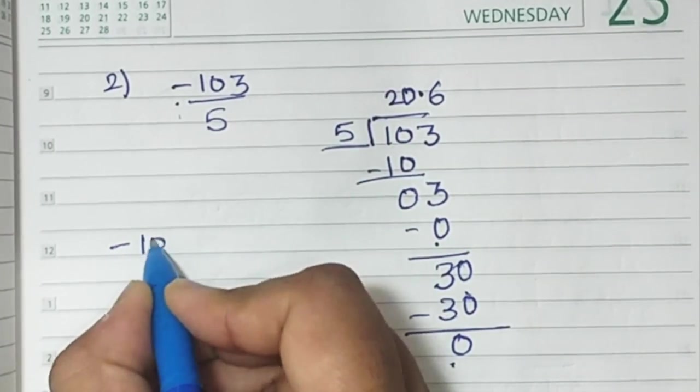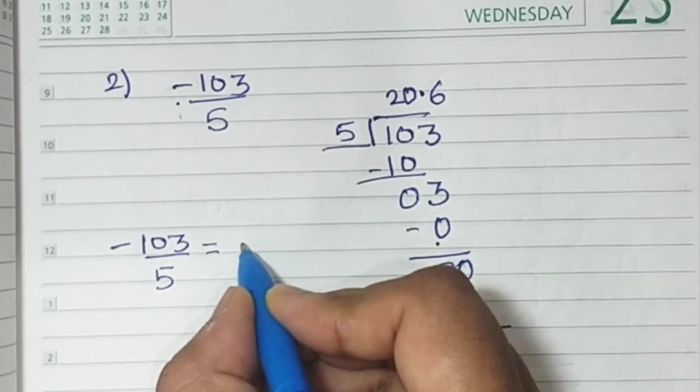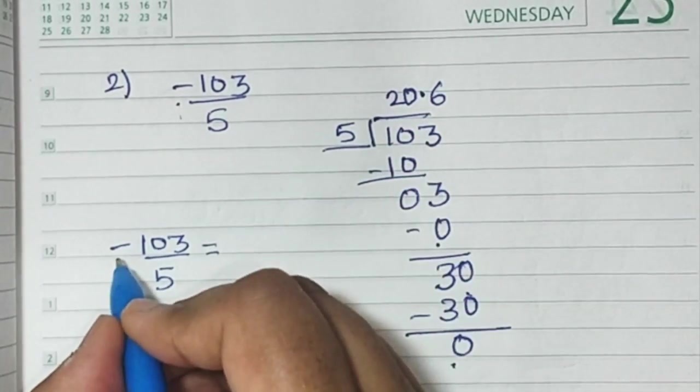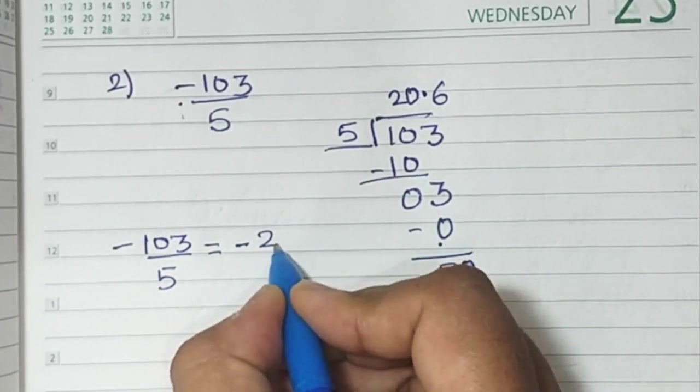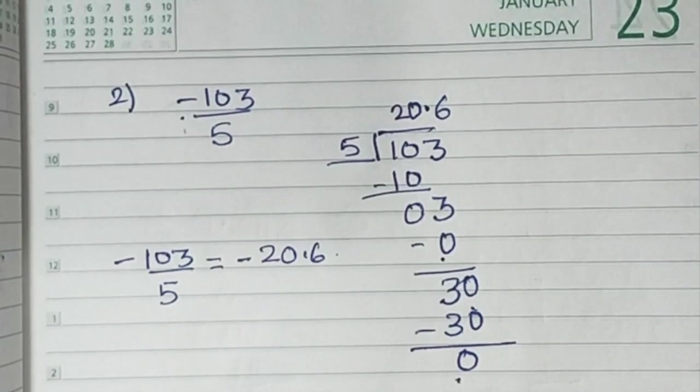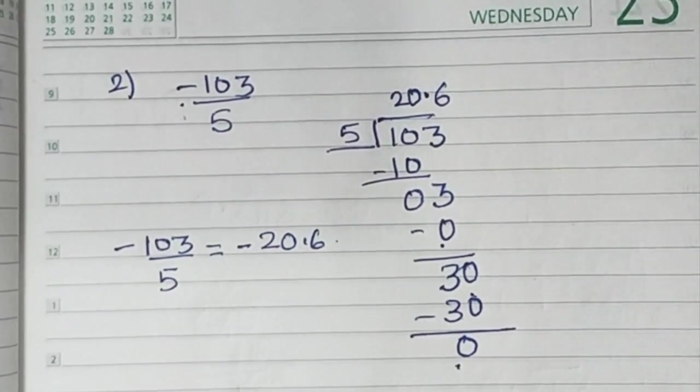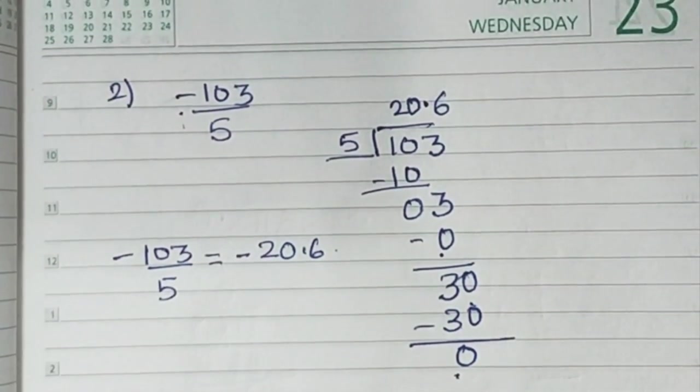Your minus 103 upon 5, the answer is 20.6. But since it is minus, you will write minus 20.6. I hope this is clear to you. And now you've understood how to write a rational number in decimal form. Thank you.